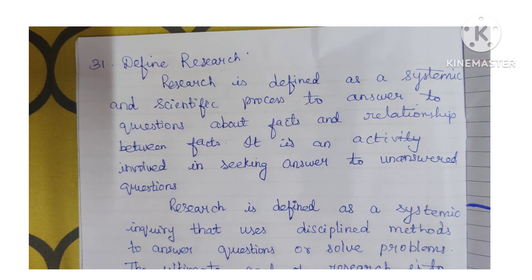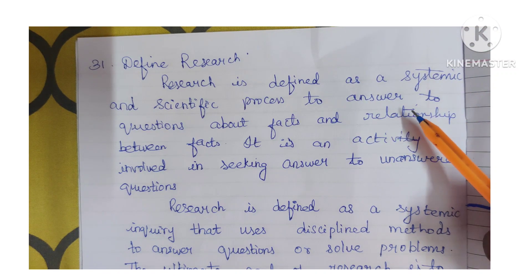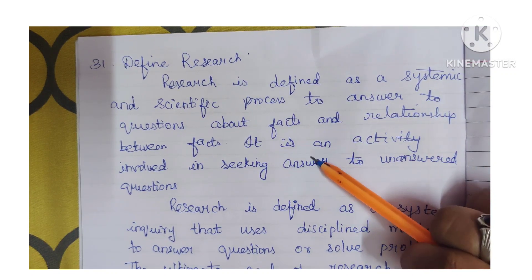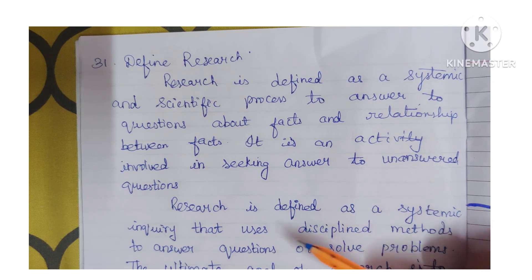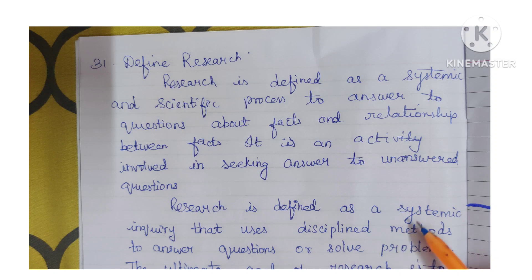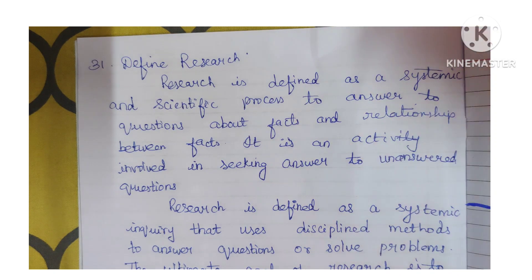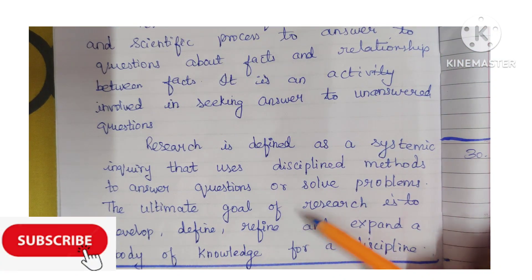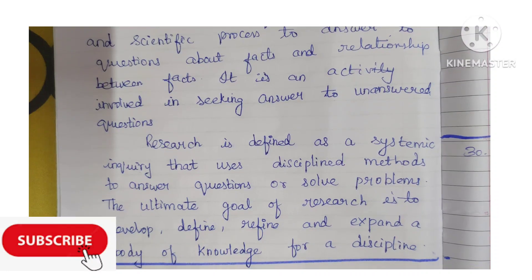Question 31: Define research. Research is defined as a systematic and scientific process to answer questions about facts and relationships between facts. It is an activity involved in seeking answers to unanswered questions. Research is also defined as a systematic inquiry that uses disciplined methods to answer questions or solve problems. The ultimate goal of research is to develop, refine, and expand a body of knowledge for a discipline.